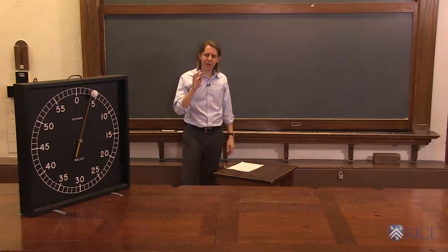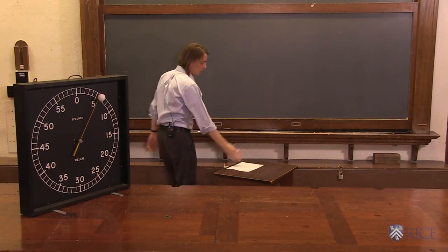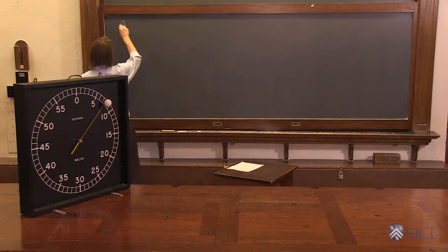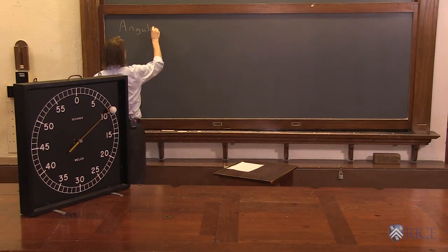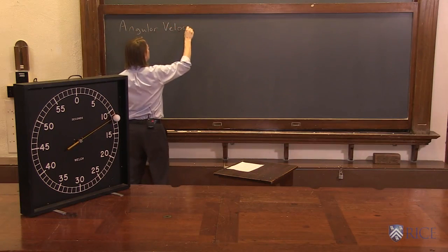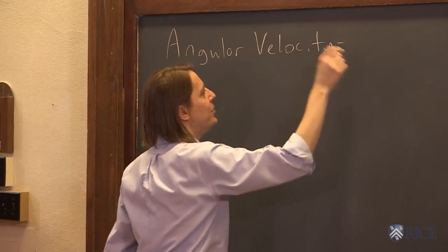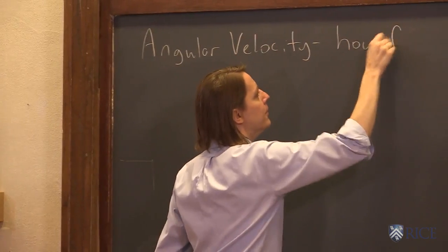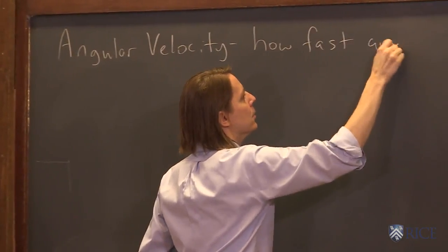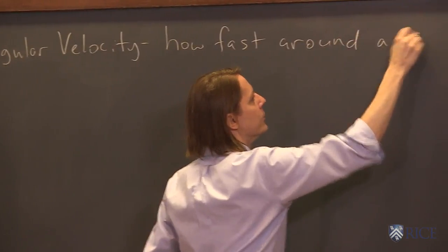So now that we've settled on what angular position means, we can move on to angular velocity. Simple definition: how fast around a circle?